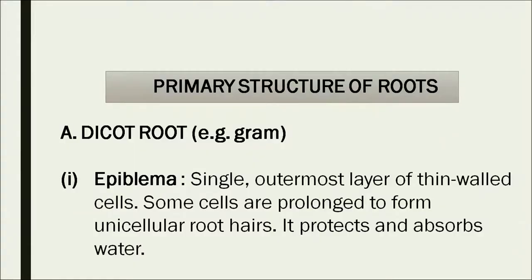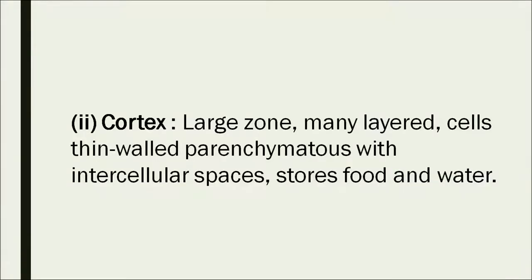Imagine the way you cut onions transversely — the structures visible under the microscope are layer by layer. In the dicot root of gram, the outermost layer is the epiblema: a single outermost layer of thin-walled cells, some prolonged to form unicellular root hairs, which protect and absorb water. The next layer is the cortex — a large multi-layered zone of thin-walled parenchymatous cells with intercellular spaces.